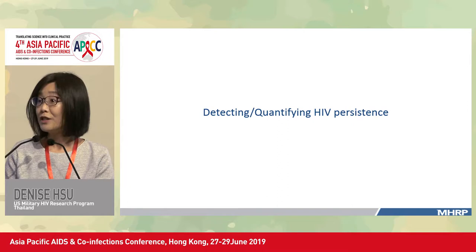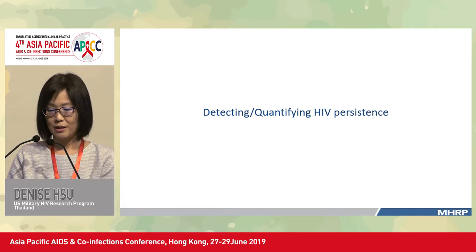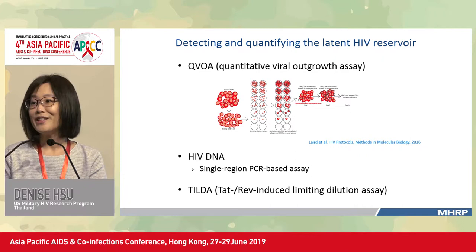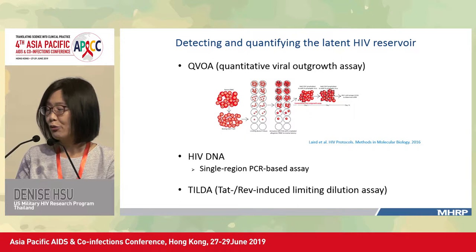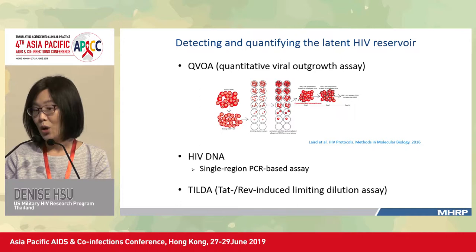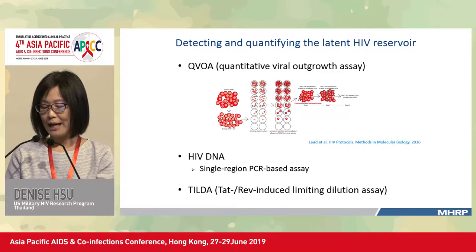There are many methods to quantify the HIV reservoir. The most commonly used methods in the literature include firstly the viral outgrowth assay, which is thought of as the gold standard to quantify the latent HIV reservoir.